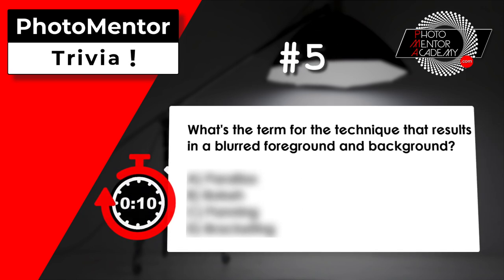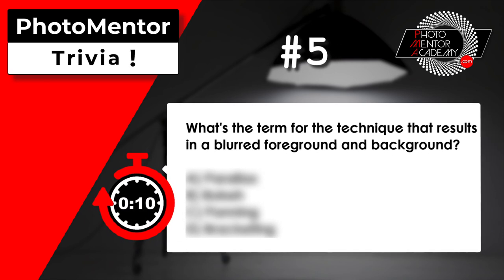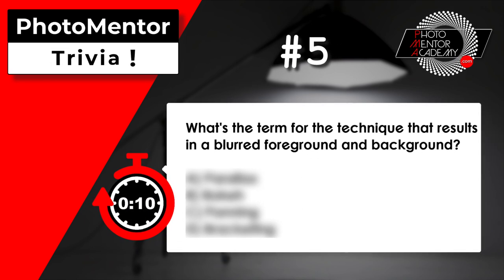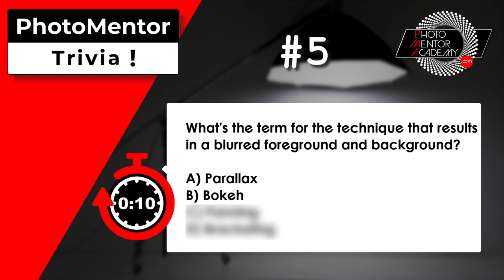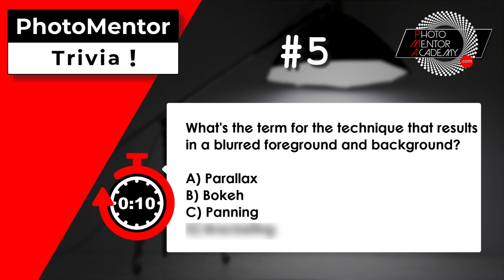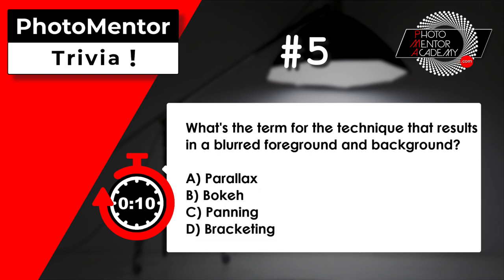What's the term for the technique that results in a blurred foreground and background? A. Parallax. B. Bokeh. C. Panning. D. Bracketing.